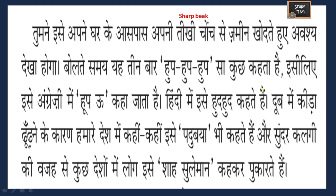While speaking, it says 'hoop hoop hoop' three times, so in English it is called 'hoopoe.' In Hindi we call it Hudhud. Since it searches for insects from the ground - tub meaning mud or ground - it is also called 'padubaya' in some places in our country.